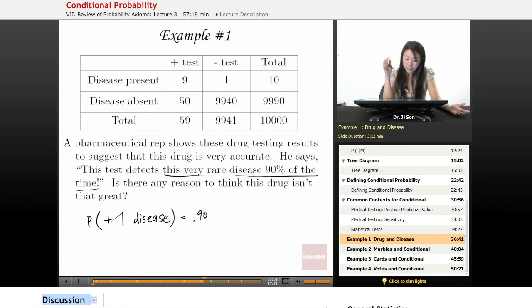P(+ test | disease) is 90%, right? So this is what we call sensitivity. This test has good sensitivity. When you definitely have the disease, it's highly likely that you'll have a positive result. But is there any reason to think that this drug might not be that great?